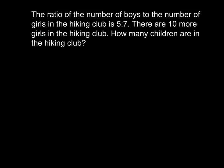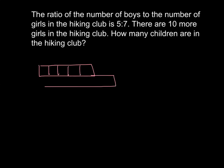Okay, let's go over the problem. The problem says the ratio of the number of boys to the number of girls in the hiking club is 5 to 7. There are 10 more girls in the hiking club. How many children are in the hiking club? So for this one we want to draw a bar model to represent our ratio. We have 5 to 7, and we want to make sure we label — that's boys to girls.